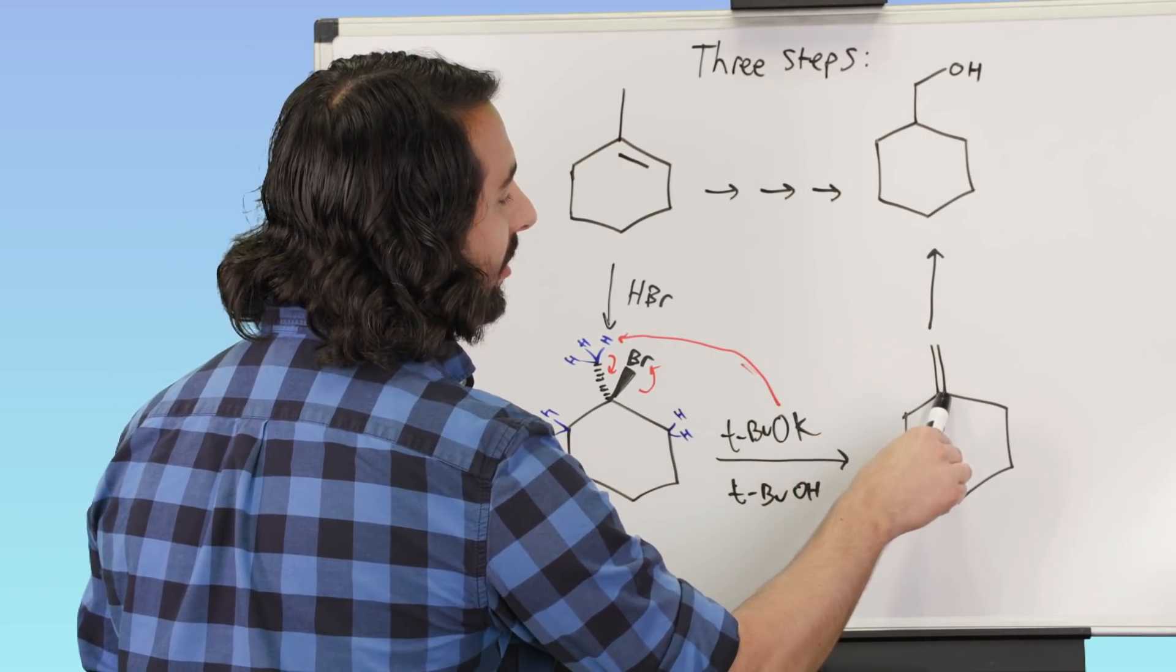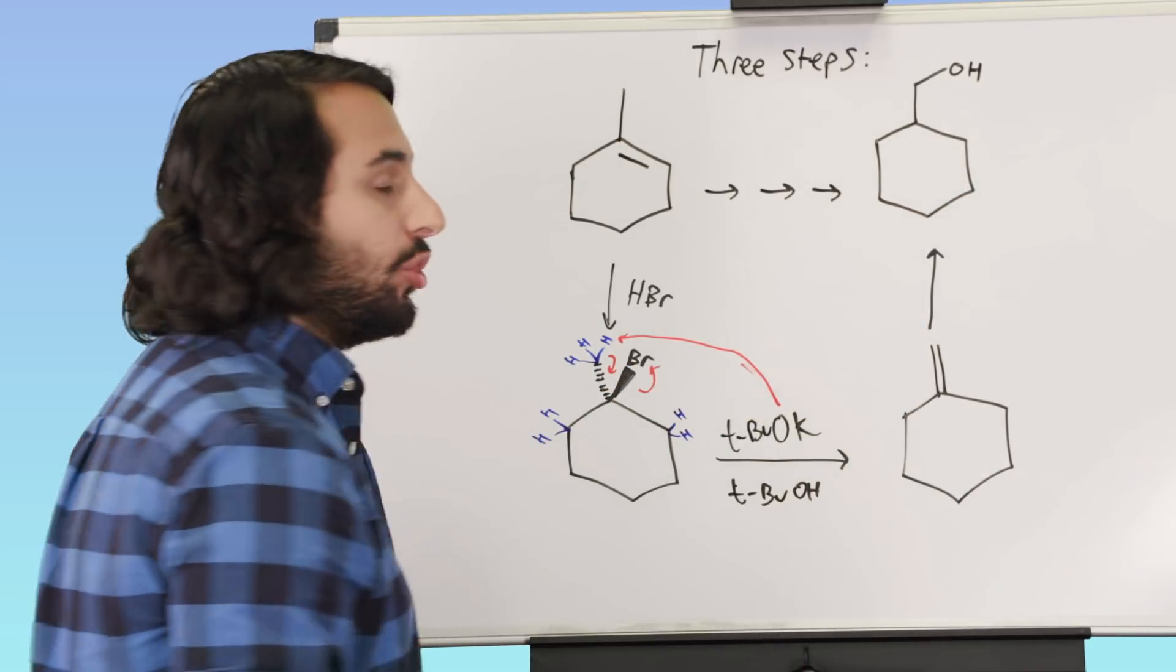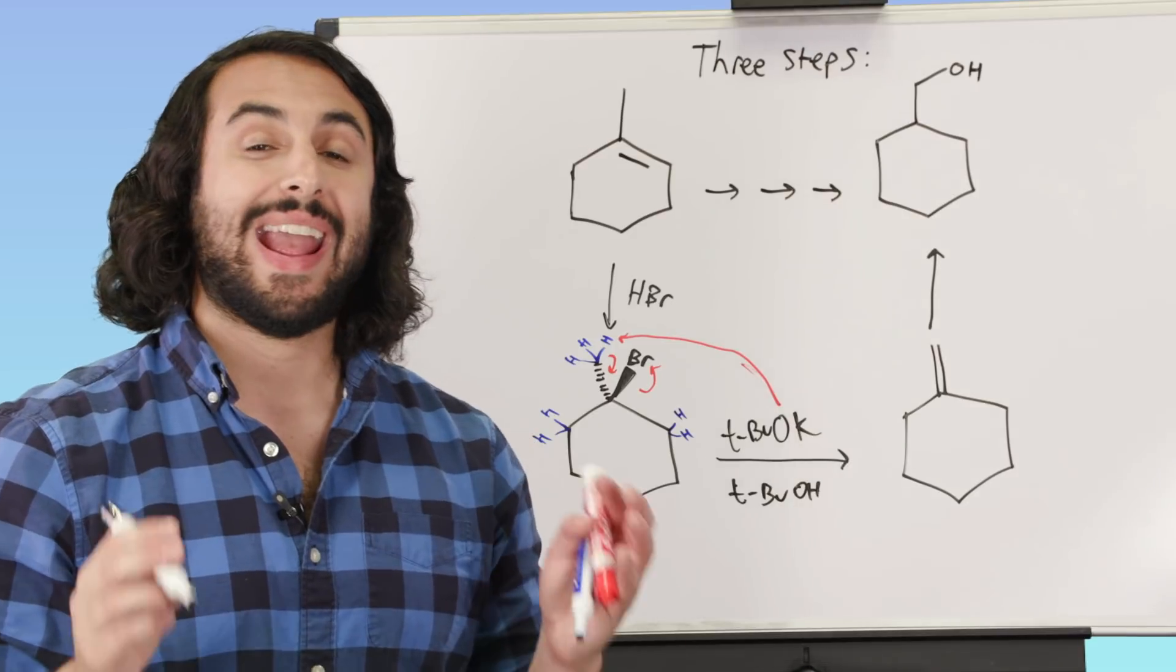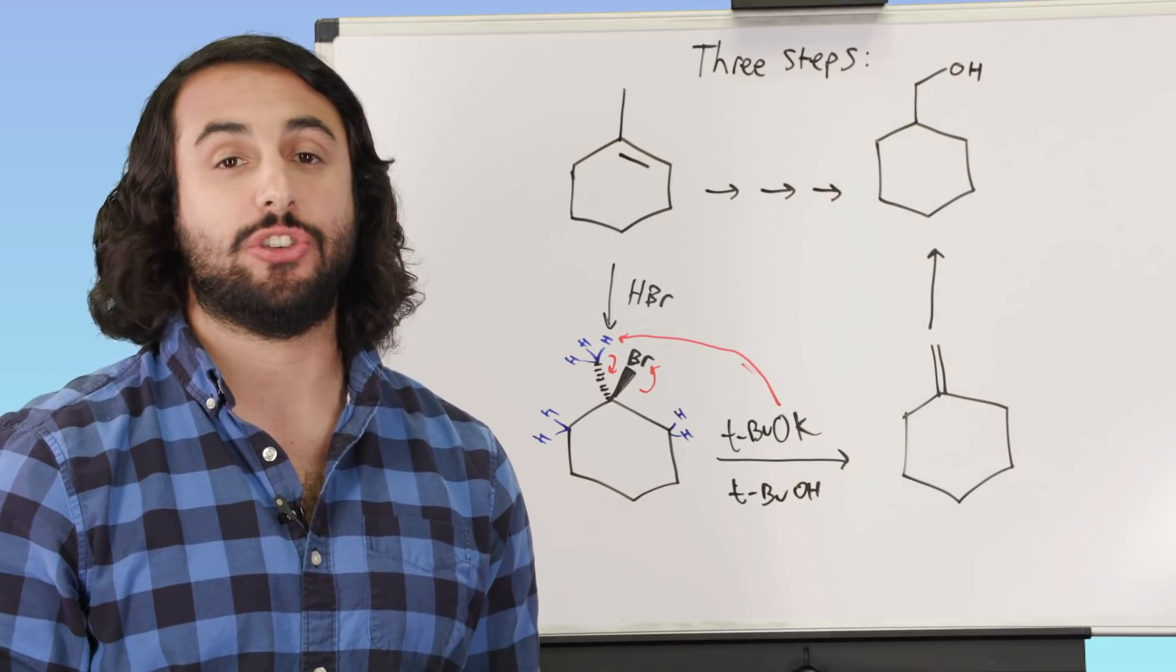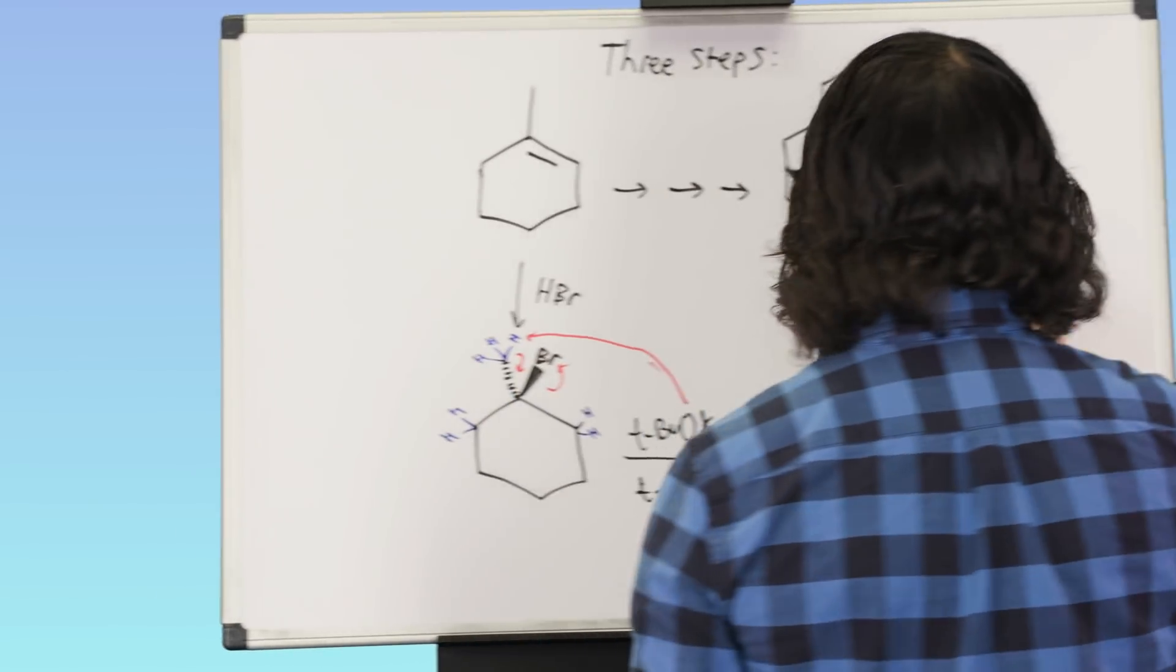Now of these two carbons, this is clearly the more substituted than this one, and the OH ends up on the less substituted carbon. So what method do we know to do anti-Markovnikov hydration? Well we've got our hydroboration oxidation. That is the way that we know to do that.